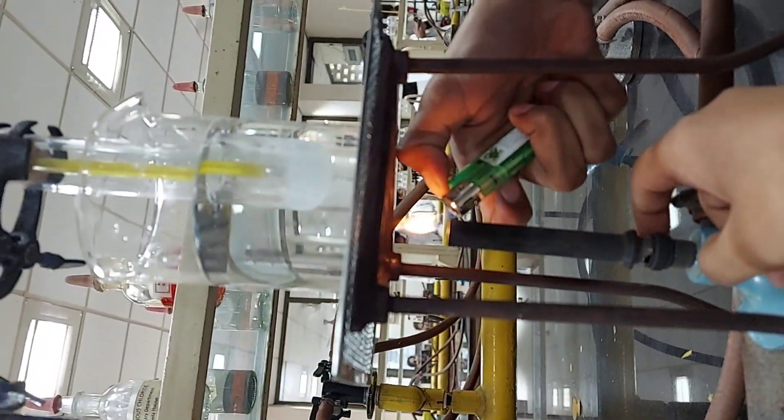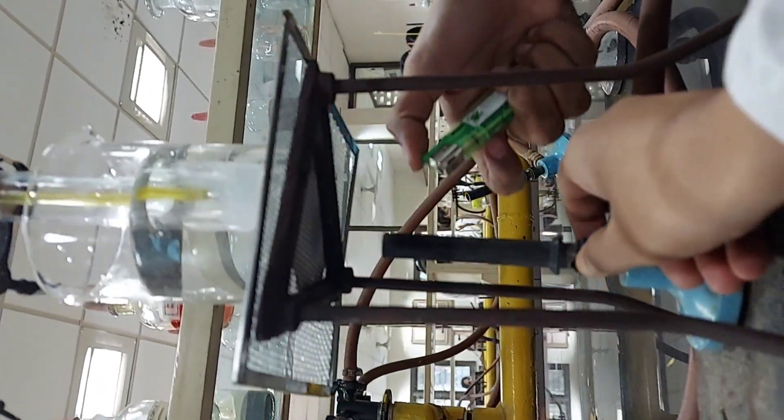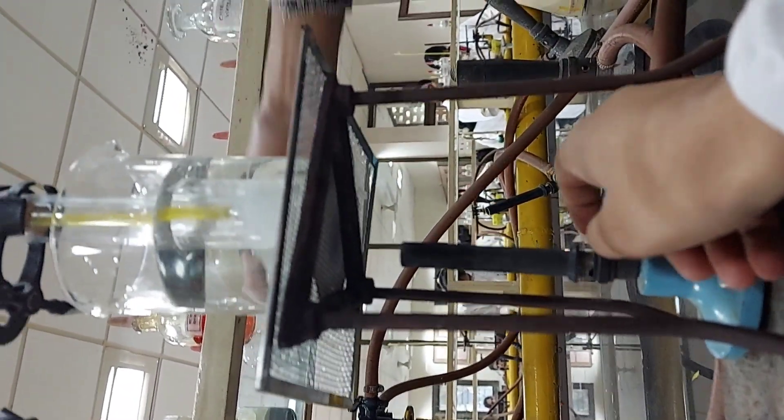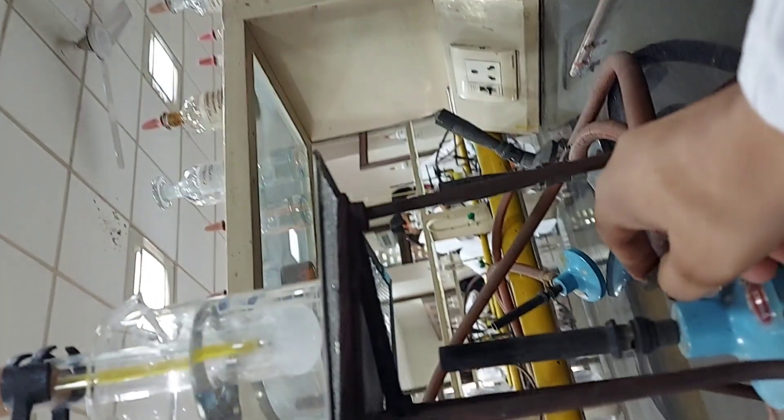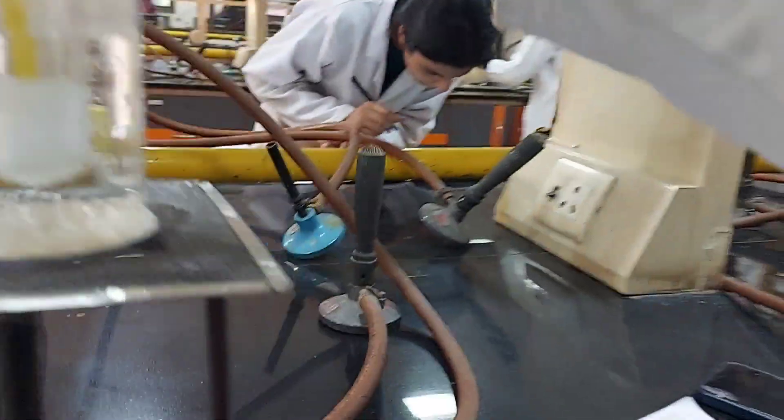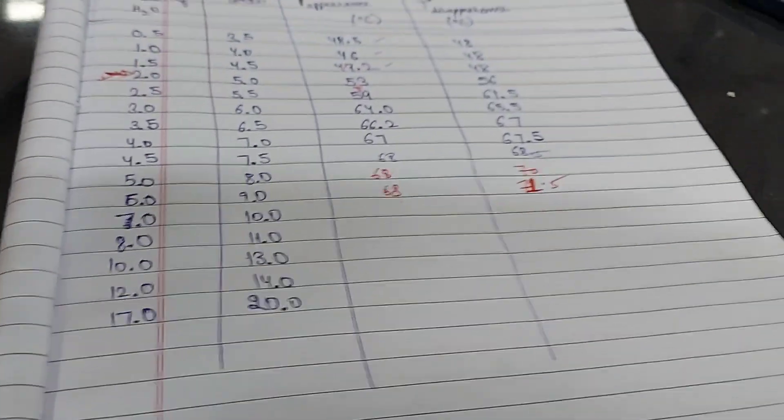So we have two types of temperatures: one when the turbidity disappears and again when it reappears. We take the average of these values and plot a graph of the miscibility temperature versus the mass percent of phenol.